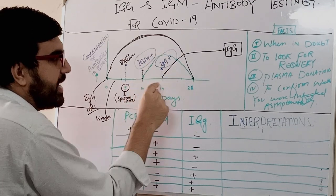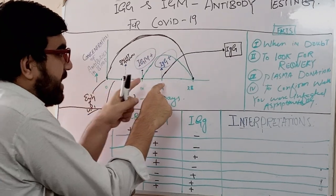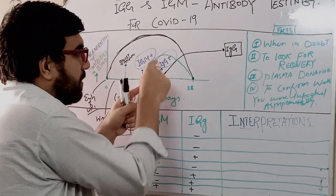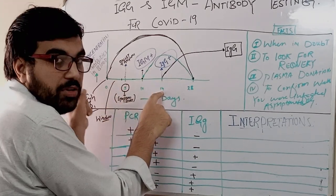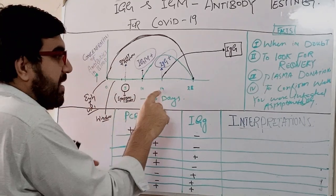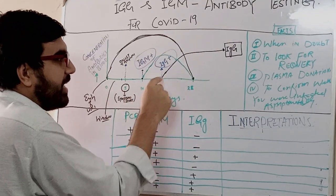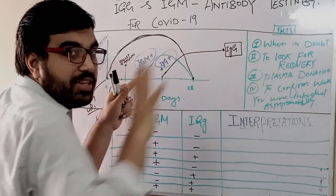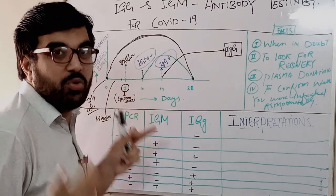IgM rises and reaches its peak at day 14 of the total cycle — that is the ninth day of symptoms. IgG also appears at day 14 of the total cycle, or the ninth day of symptom onset. We do not know for how long IgG remains in the blood.